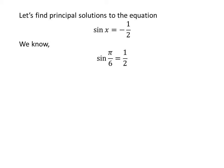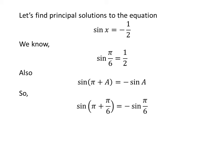We know the value of sine of pi upon 6 is half. We also know the trigonometry identity sine of pi plus a is equal to minus sine of a. Applying this identity, sine of pi plus pi upon 6 is equal to minus sine of pi upon 6. Since pi plus pi upon 6 equals 7 times pi upon 6, and plugging in the value of sine of pi upon 6, we get sine of 7 times pi upon 6 is equal to minus half.